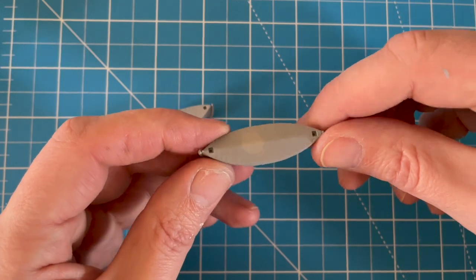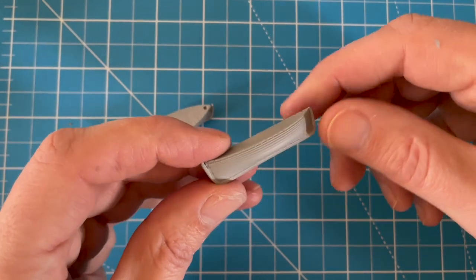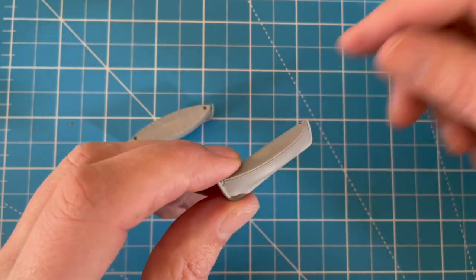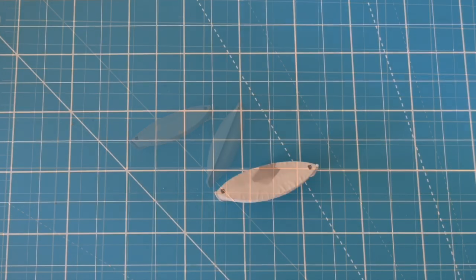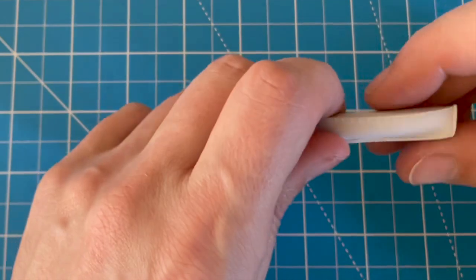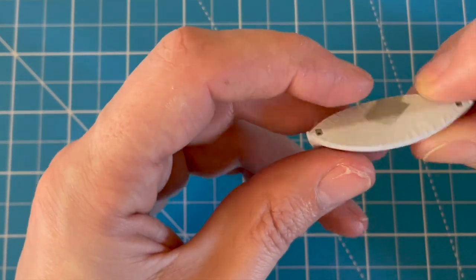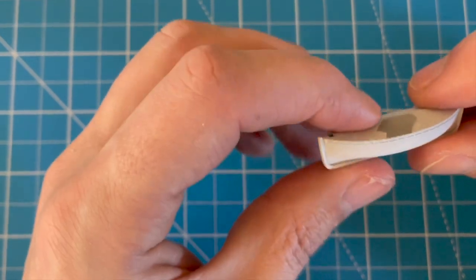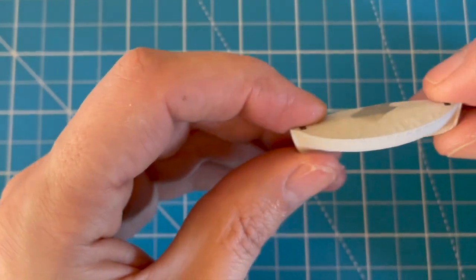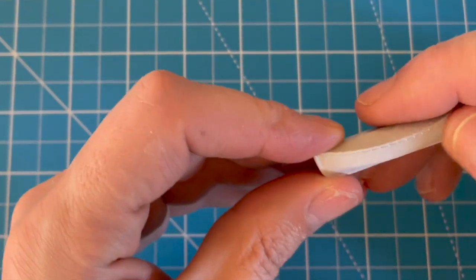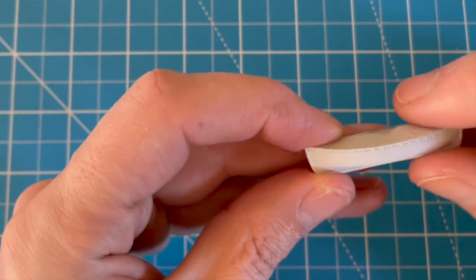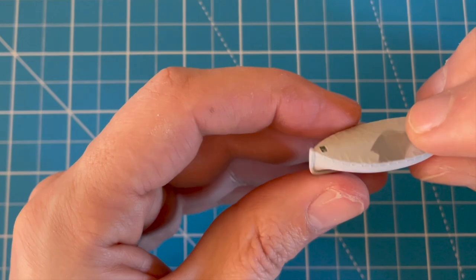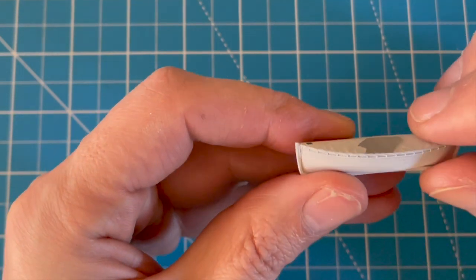The next step, I just sprayed some Tamiya flat white over the whole lifeboat. That's looking really good. I might do a little bit of a wash just to bring out the planking a little bit better. And now I'm going to move on. I'm going to paint the canvas cover and the brown kind of surround of the lifeboat.